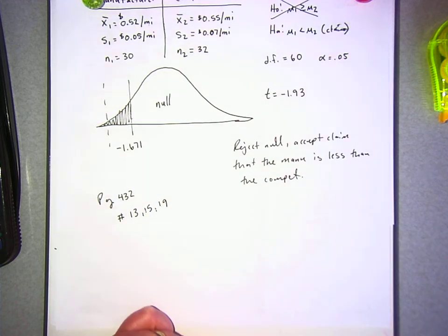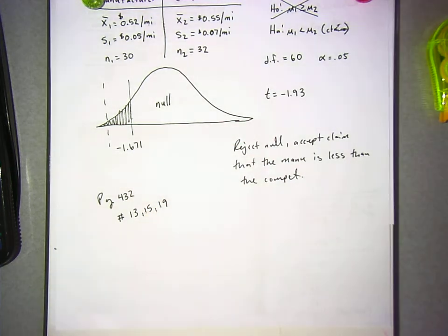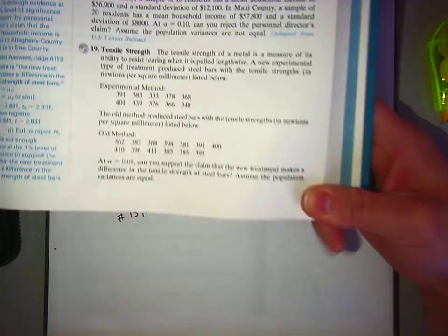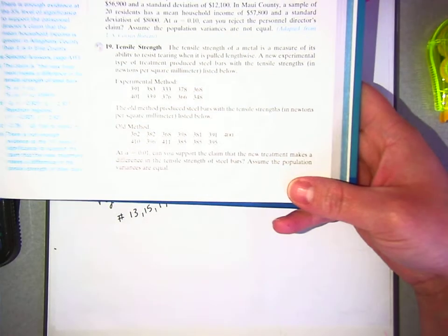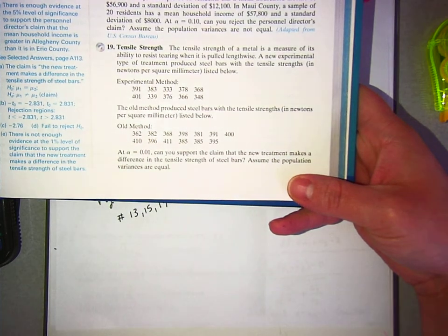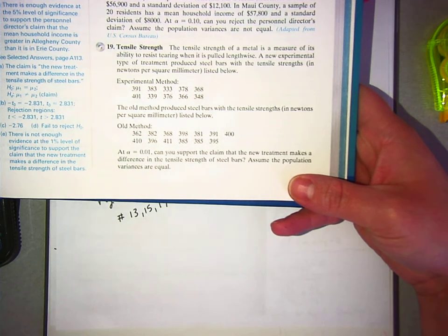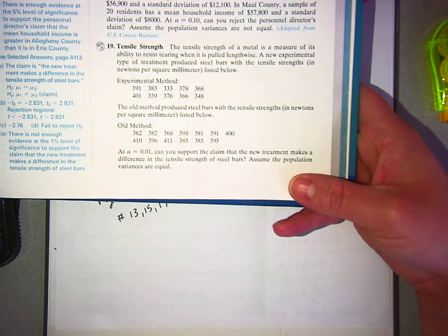And the reason why I picked 19 is because 19 is one of those that actually has data in it. Instead of just giving you the stats, so you'll be able to use your calculator on that one. But you have to use L1 and L2, okay? And practice that and see if you can do it.